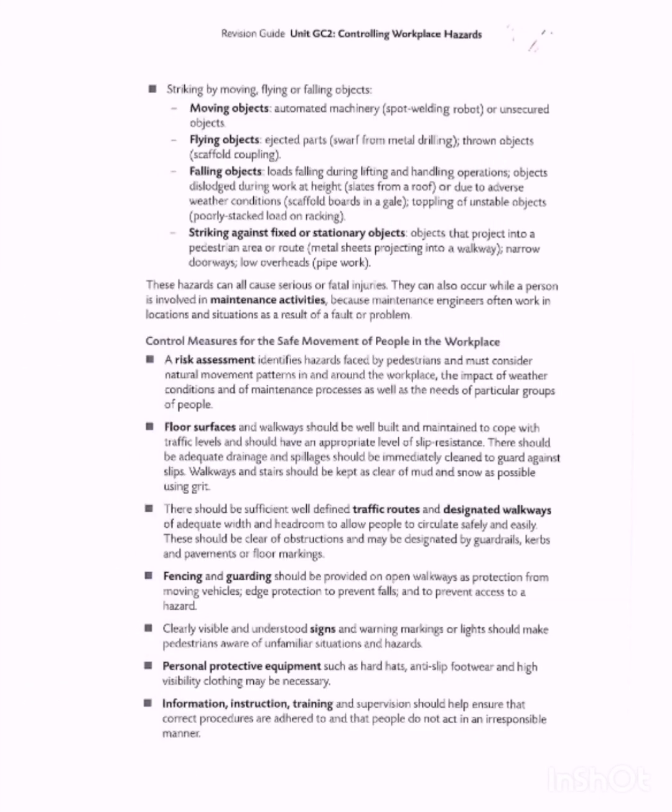We're also talking about being struck by moving, flying, or falling objects. Moving objects include automated machinery, spot welding robots, or unsecured objects. Flying objects include ejected parts, swarf from metal drilling, and thrown objects like scaffold components. These are hazards where the machine or equipment can cause injury if not properly controlled.